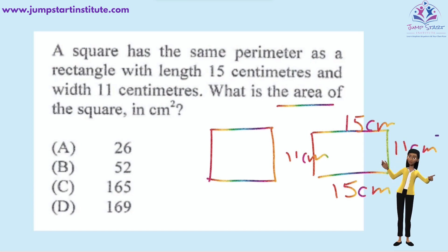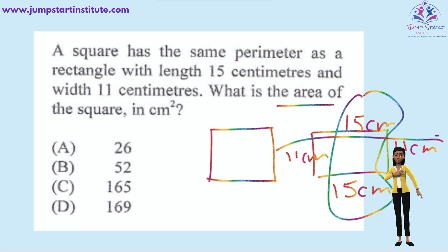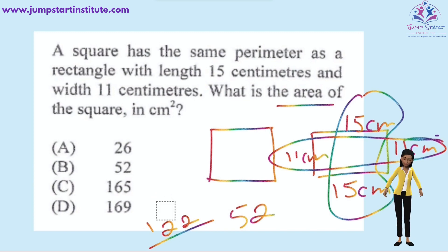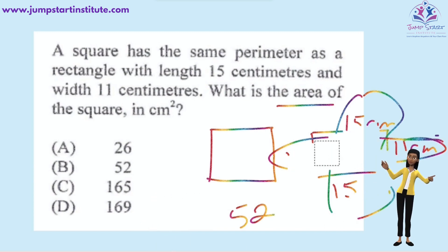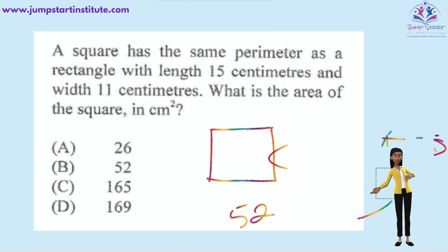15 plus 15, that's 30. And 11 plus 11, that's 22. 30 plus 22, that's equal to 52. This means that the perimeter of the square is 52 centimeters. But because the question asked us for the area of the square, to calculate the area, we need to say length by width. So, we need to now calculate the length of the square.